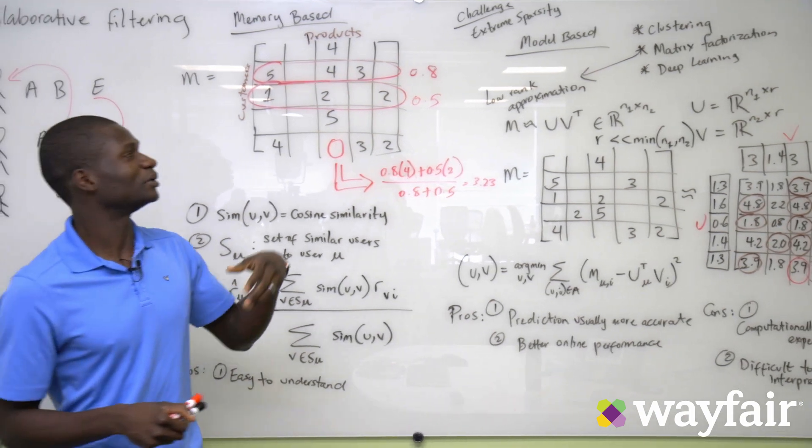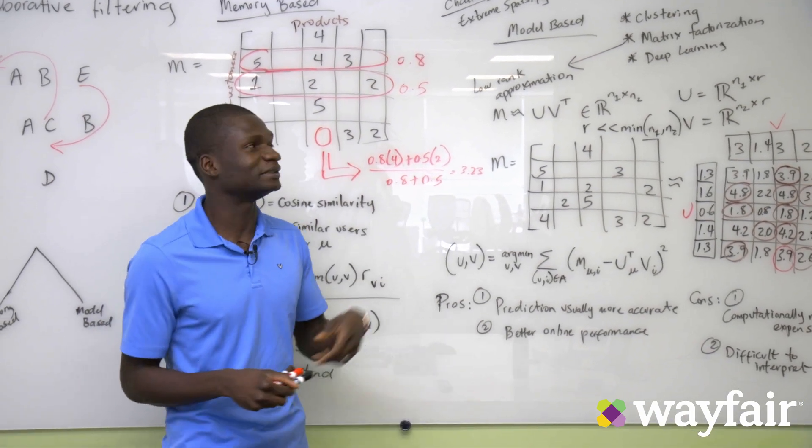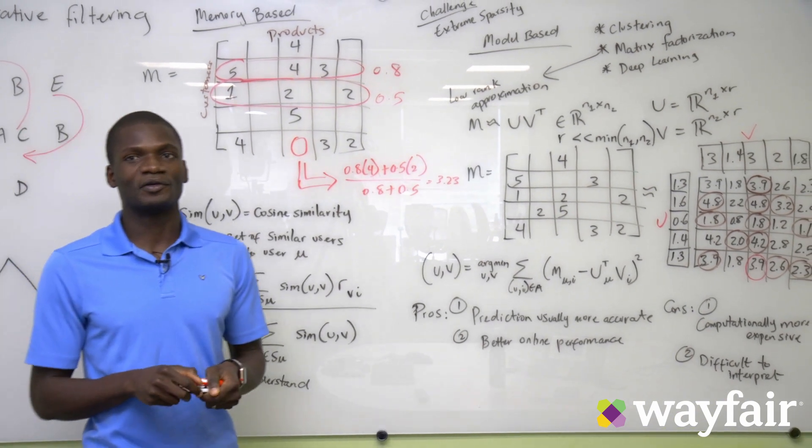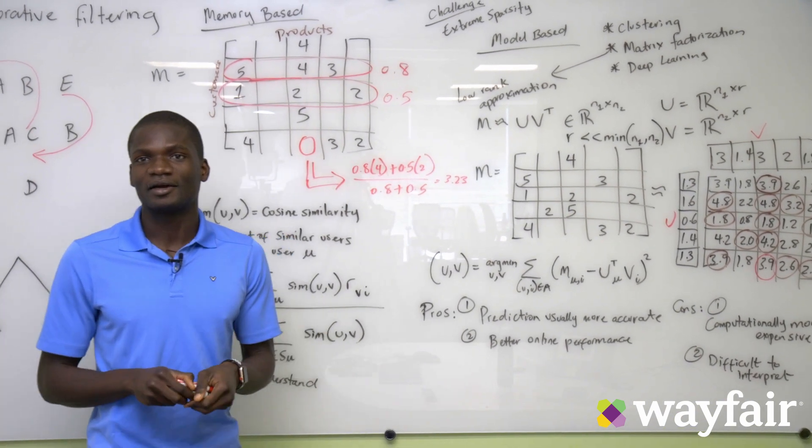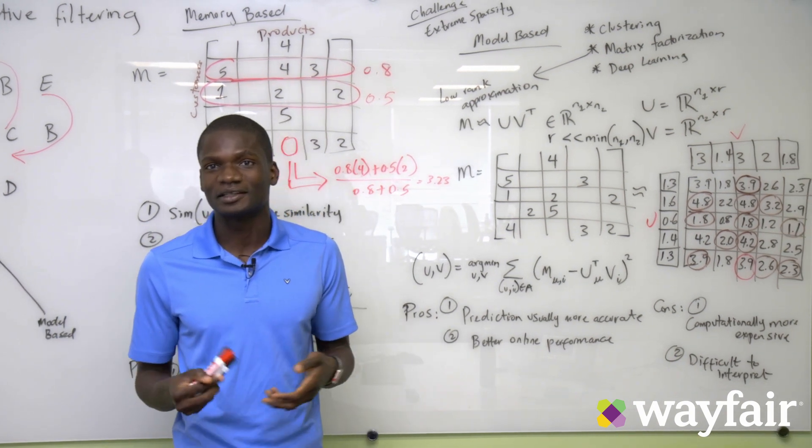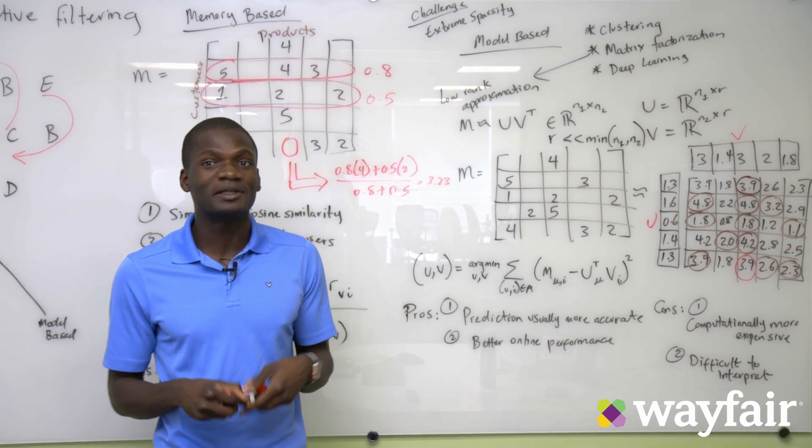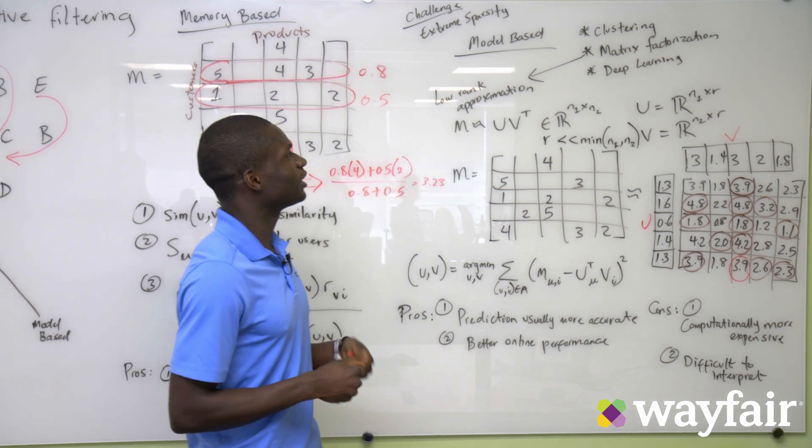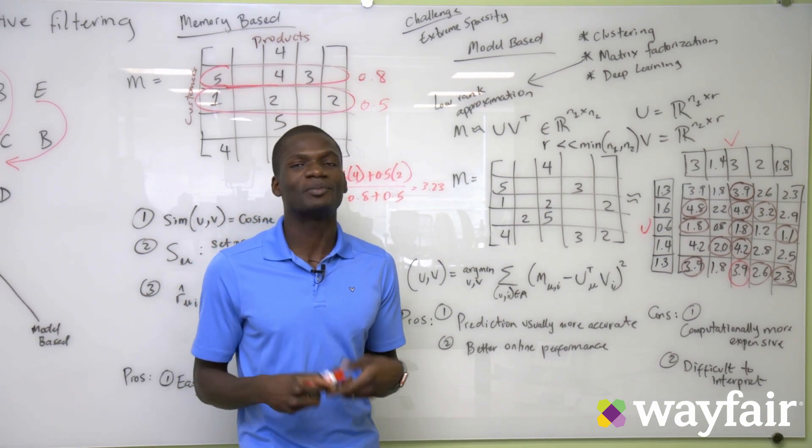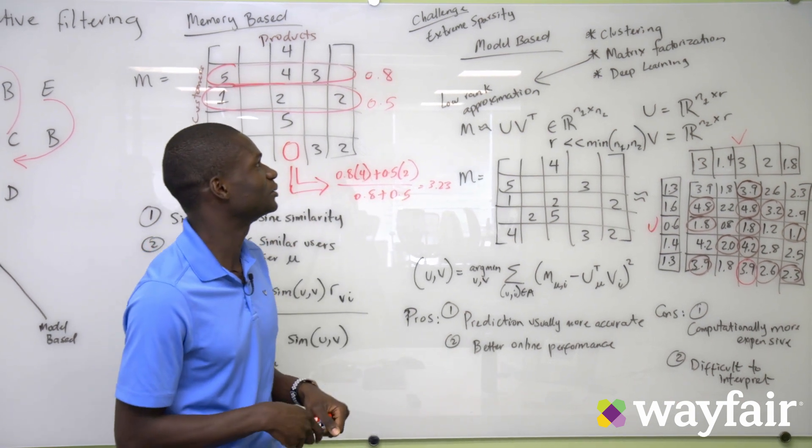So the main challenge with a memory-based approach is the extreme sparsity of matrix M. If you consider in the past year of all the products that you've bought, how many of them have you actually rated? If you're like me, it's probably not that many. And because of the extreme sparsity, we need some kind of model-based approach to solve our problem.